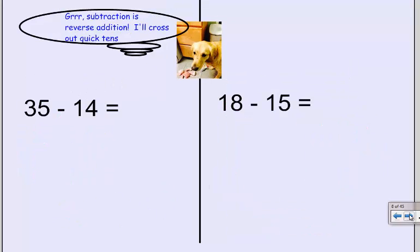We can use this same strategy for subtraction. In subtraction, I need to start with my whole and take away my part. So my whole here is thirty-five. So I'm going to make three quick tens and five ones. And I'm always going to draw circles with subtraction. And now, subtraction means take away or less. So I need to take away one quick ten and four ones.